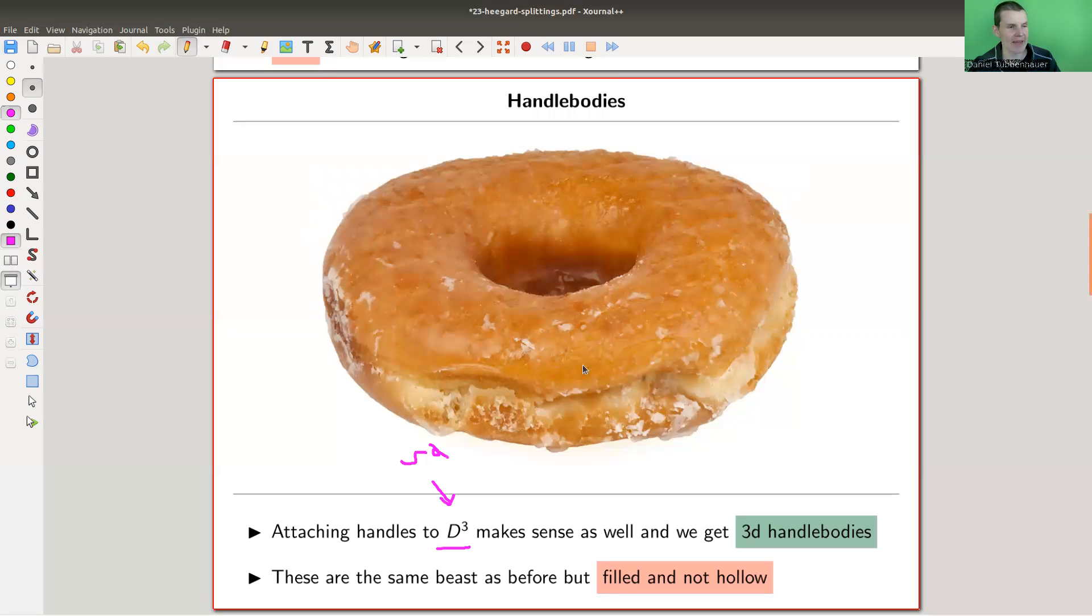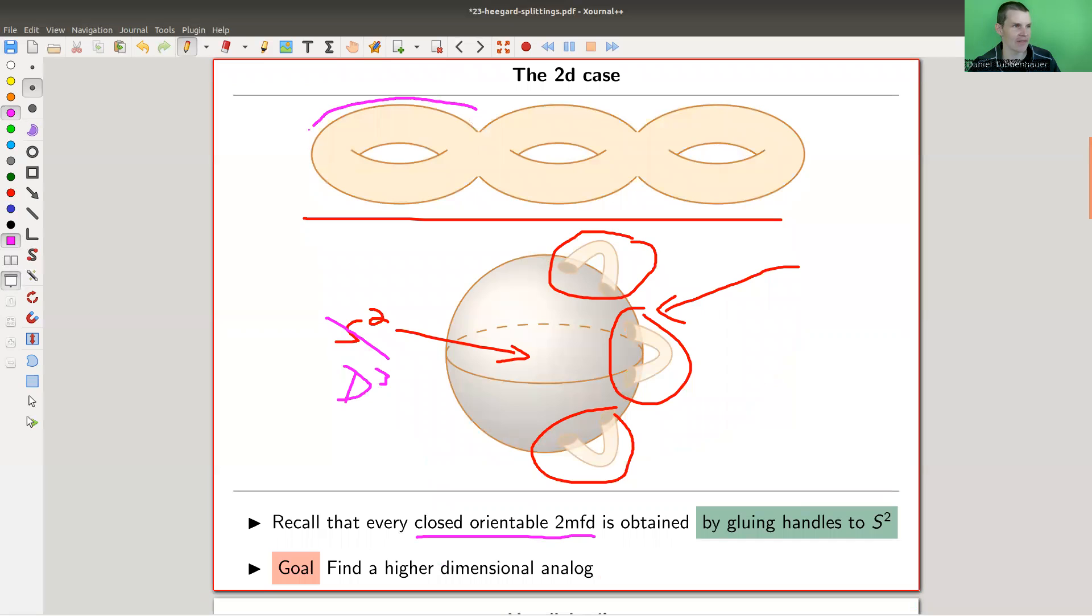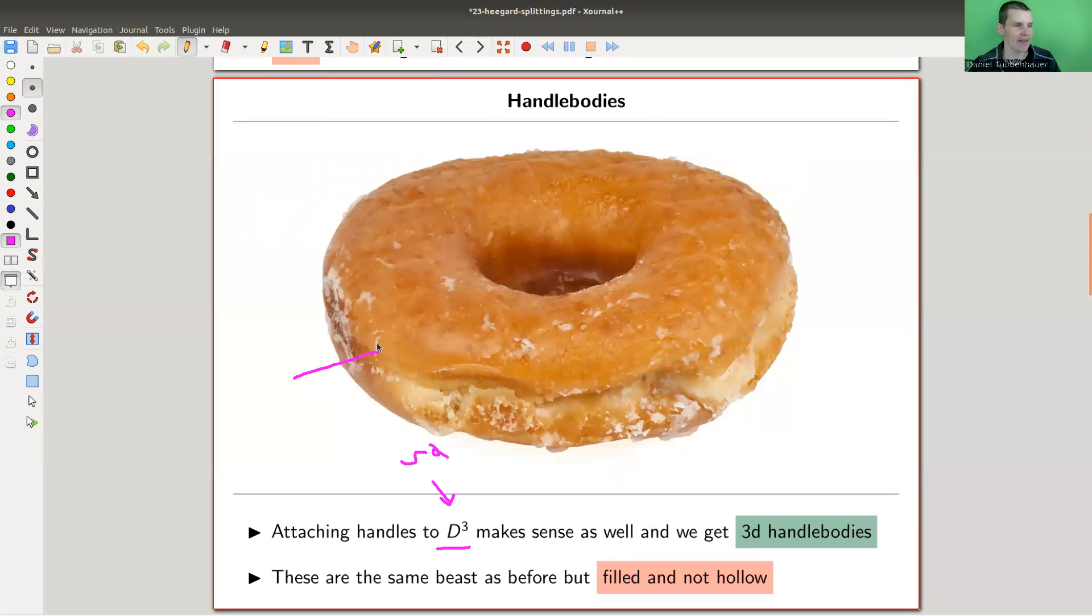And what you get is a handle body. So in this case, we would produce a swim ring, a torus which is hollow, right? Swim ring, hollow, you can blow air inside. So that's what you get in the two-dimensional case. In this case, you get more like a doughnut. The usual confusion in topology.